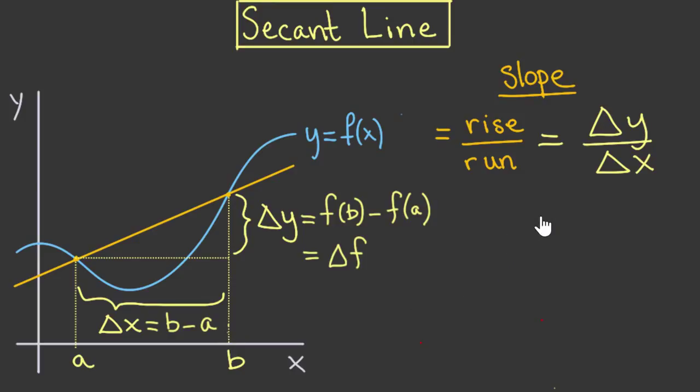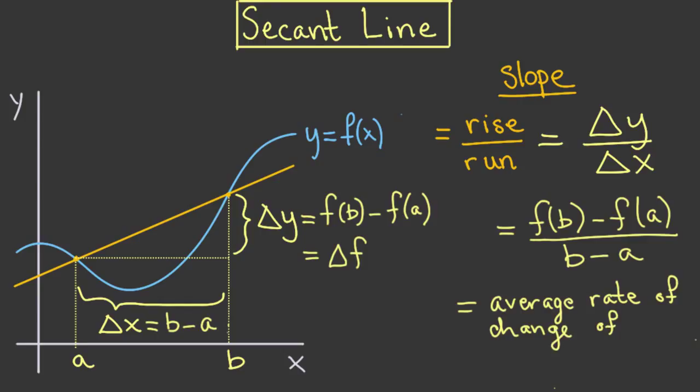It is given by the ratio f of b minus f of a all over b minus a. Now, hopefully this expression looks a little bit familiar to you. This is the expression that computes the average rate of change of our function f with respect to x.